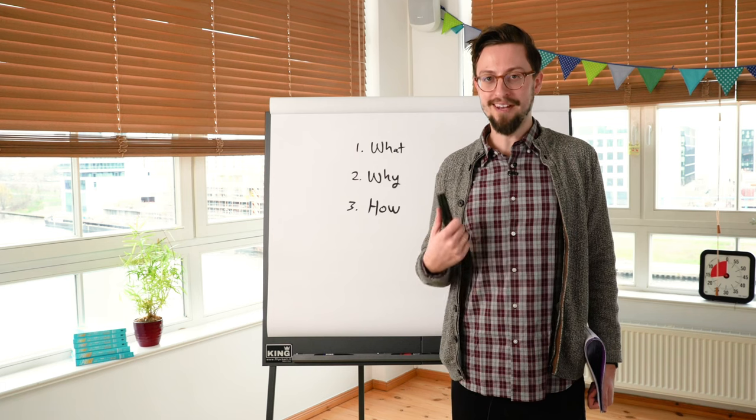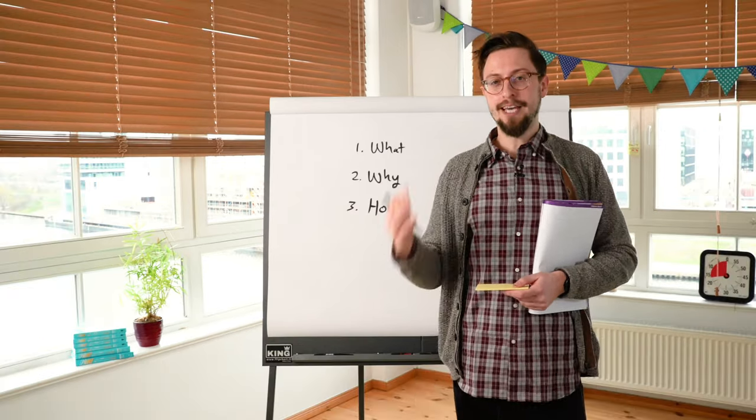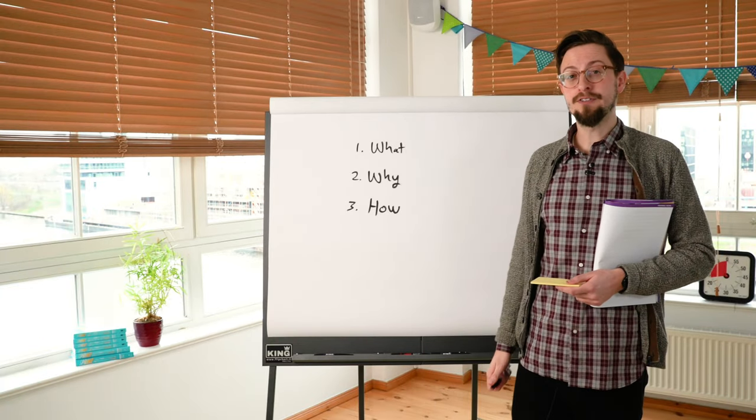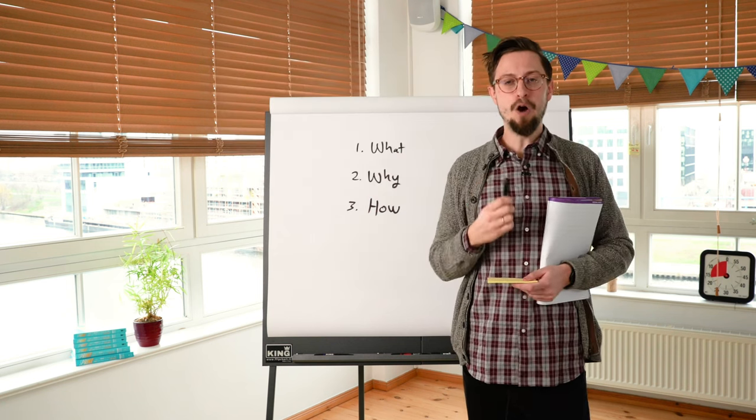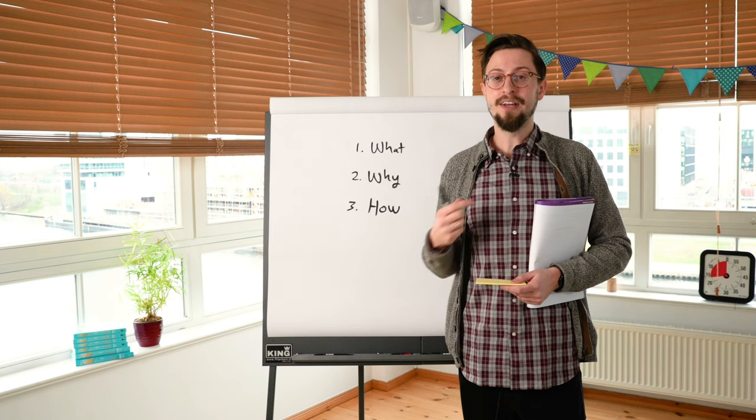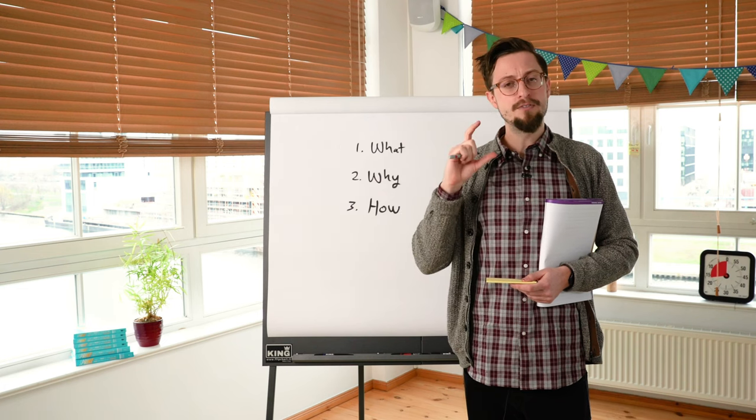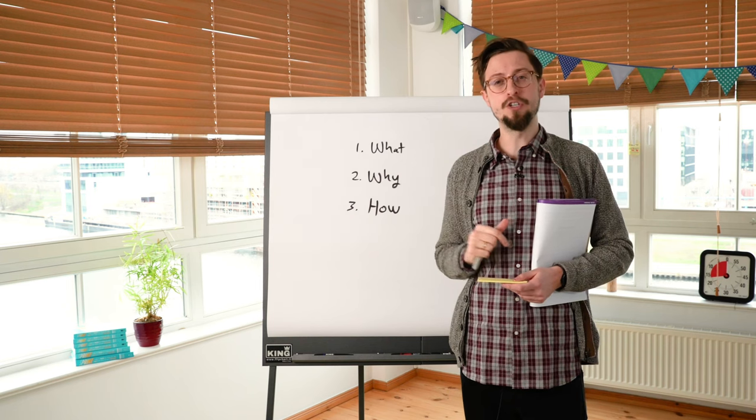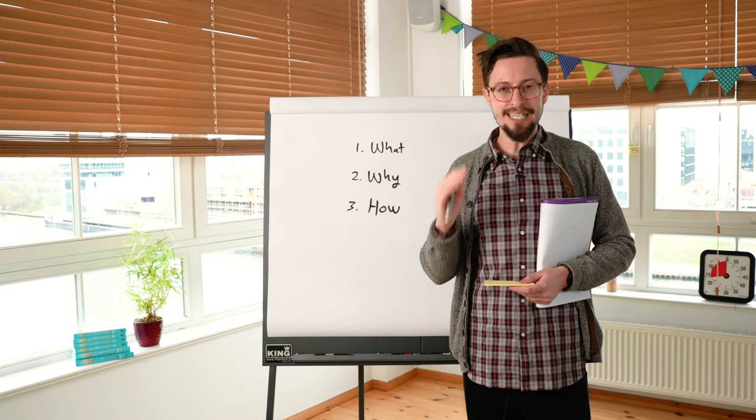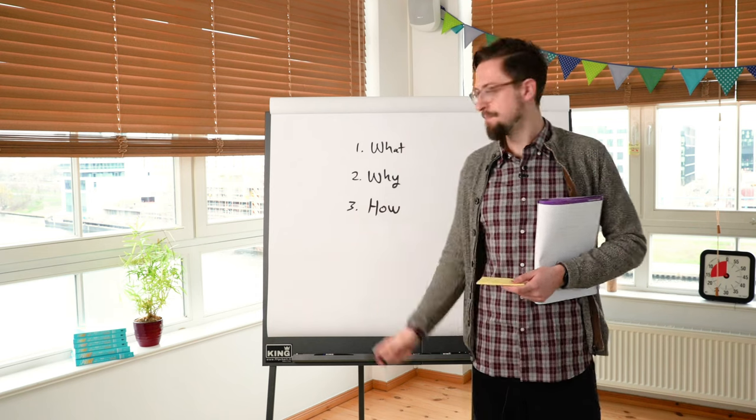Let me give you a very simple example. So a super common exercise that you'll see in workshops is called how might we. Let me show you how to give those instructions correctly. Hey everybody, we're now going to do an exercise called how might we. What? How might we is a very simple exercise that's going to allow us to turn challenges and problems that we have into very clear statements that we're going to be able to use to create solutions from. We're doing this because we need a system. We need a standardized system to create solutions from.